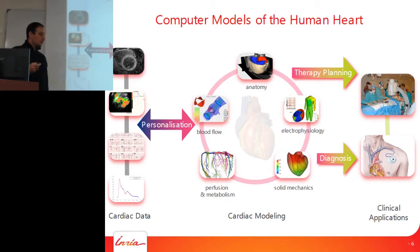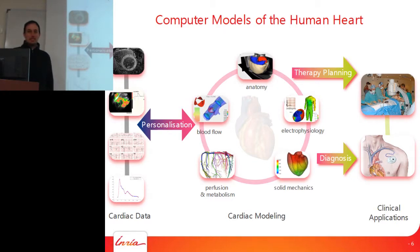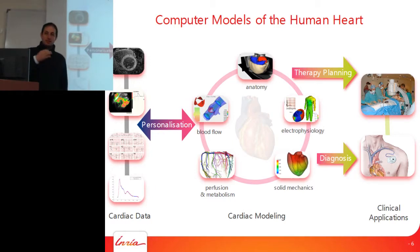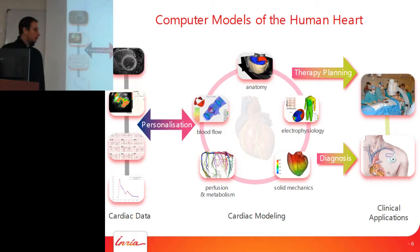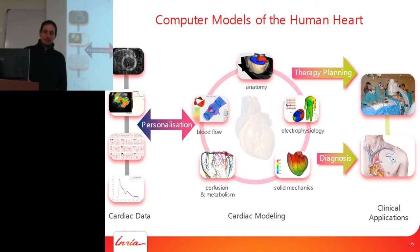Computer modeling of the heart has been a very active area for 50 years, starting in Oxford in the 1960s with Dennis Noble modeling the cardiac cell. Now many aspects are modeled — electrophysiology, mechanics, flows, perfusion — all the multiphysics aspects developed mathematically. More recently, personalization has become important: how do you go from a generic model to one representing a specific patient's heart, and how do you use this for therapy planning and diagnosis?